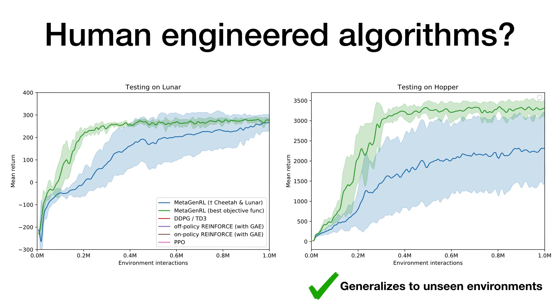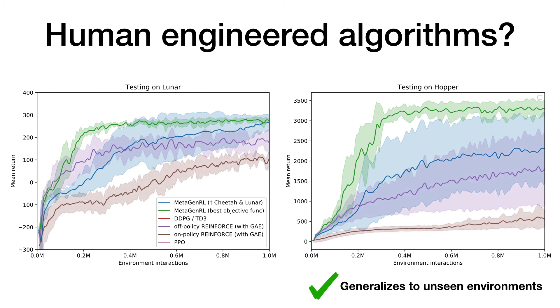Not only does meta-general generalize better than previous meta-learning algorithms, it even largely outperforms human-engineered ones, such as on-policy REINFORCE, off-policy REINFORCE, and PPO. On several environments, the meta-learned algorithm is competitive to DDPG as well.